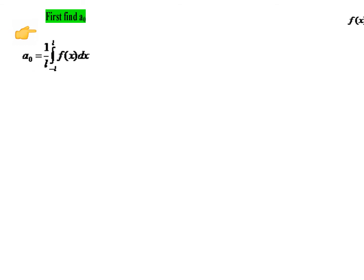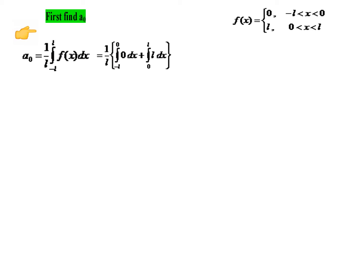First, let us find A₀. The formula is A₀ = (1/L) ∫₋L^L f(x) dx. Since f(x) = 0 on (−L, 0) and f(x) = L on (0, L), we split the integral: the first part from −L to 0 gives 0, and the second part from 0 to L gives (1/L) · L · ∫₀^L dx = x from 0 to L = L − 0. Hence A₀ = L.